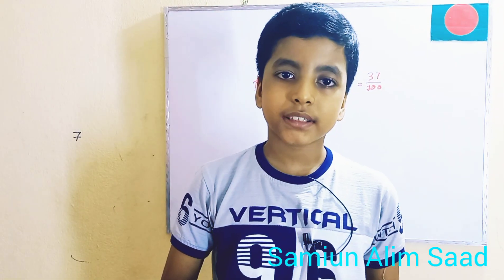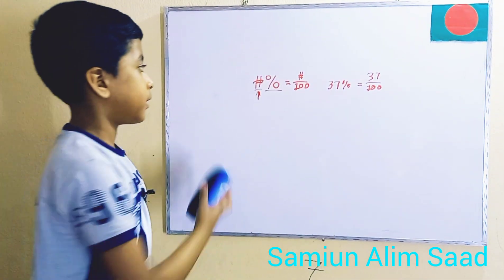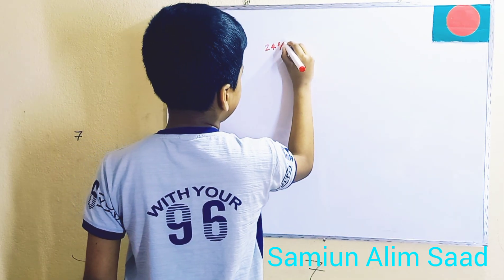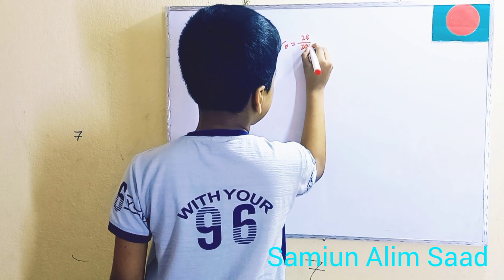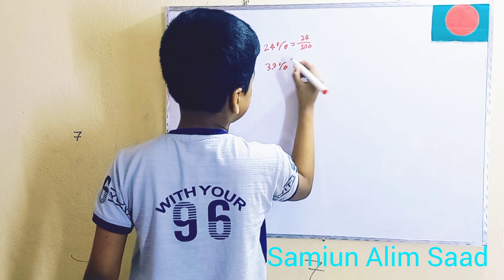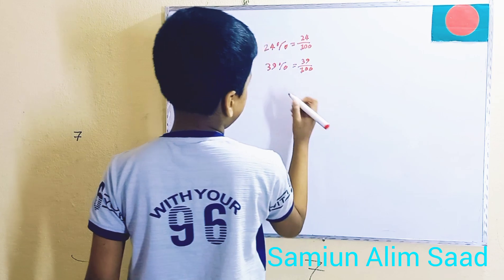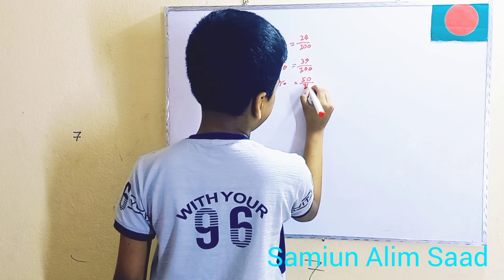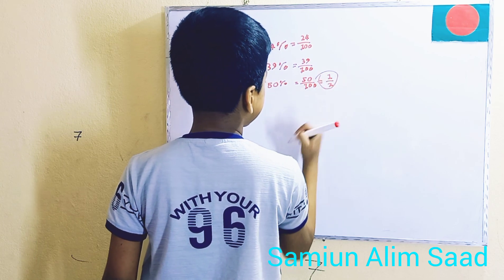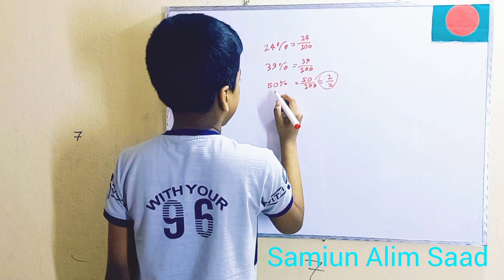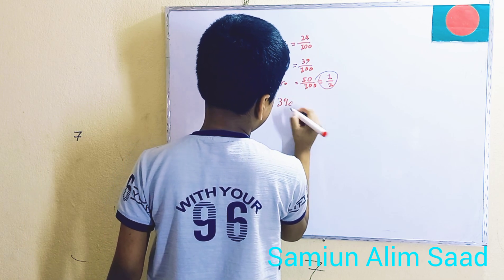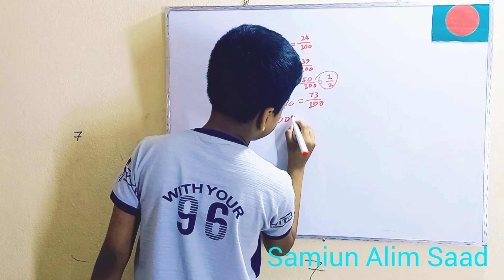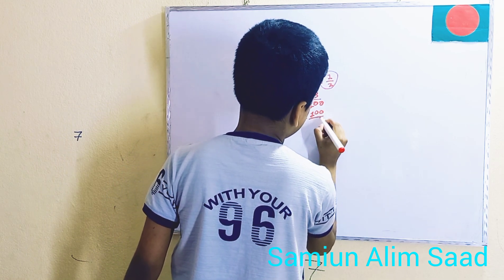Let me show you some examples. So I have 24%, which is 24 out of 100. 39% is 39 out of 100. 50% is 50 over 100, and 50 over 100 is just one half — that's a special thing we'll learn in a future video. 73% is 73 out of 100. And 100% is 100 out of 100, which equals 1.